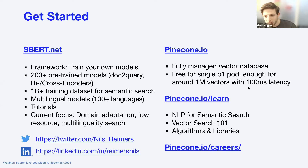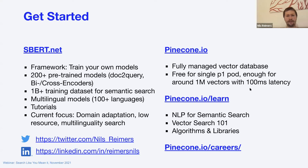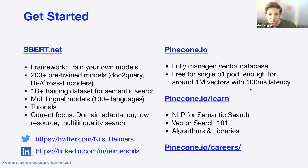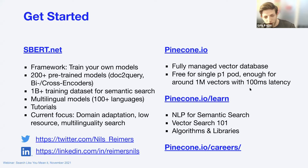Niels adds: I also have a demo on sbert.net that compares lexical search to semantic search on Wikipedia. You input simple questions like 'What is the capital of the United States' and see side by side what you get from lexical search versus semantic search. It's obvious even to a non-technical person that lexical search is bad and semantic search is so much better — seeing is believing. The tables and accuracy measurements are for the technical audience; decision makers know what a good or bad search result looks like because they use search all the time.